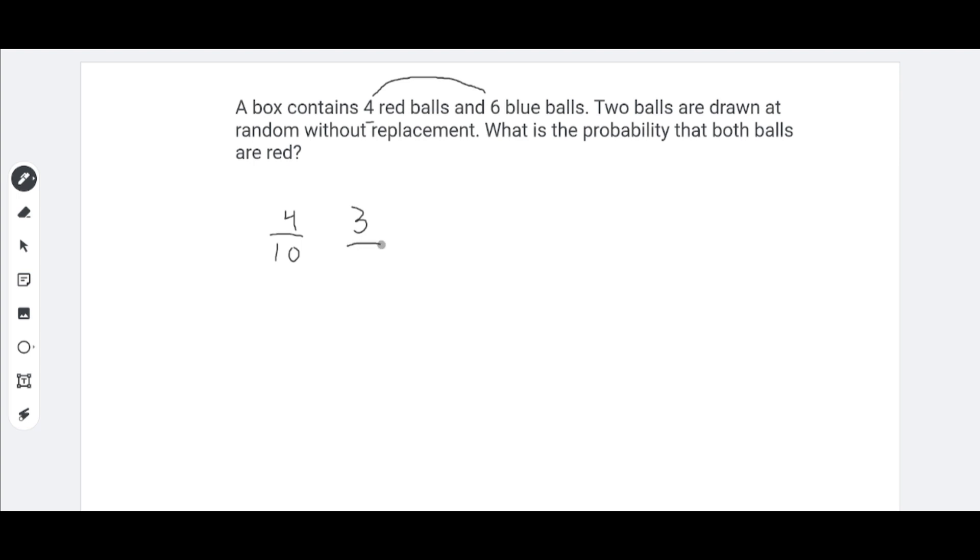So, 3 ninths is our second chance of getting a red ball again. So, if we multiply these probabilities, we would get 12 over 90, which could be simplified to 4 over 30, and finally be simplified to 2 over 15. If you got 2/15, you are correct.